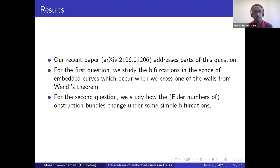With this motivation in mind, let me come to the second section, which is our results. Our recent paper addresses some parts of this question. For the first question, we study bifurcations in the space of embedded curves, which occur when we cross one of the walls from Wendl's theorem. So this is what we need to study in order to check symplectic invariance. And for the second question, we need to make a comparison with the Gromov-Witten invariants. So this means we need to understand how the various obstruction bundles that go into the definition of the Gromov-Witten invariant, how these change under such a bifurcation. We described precisely how certain simple bifurcations influence the Euler number.